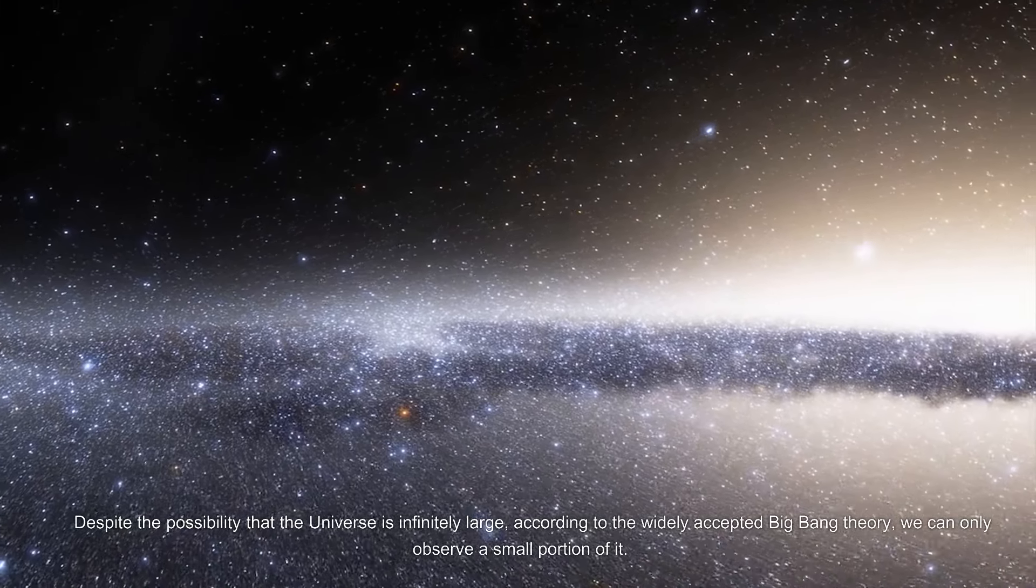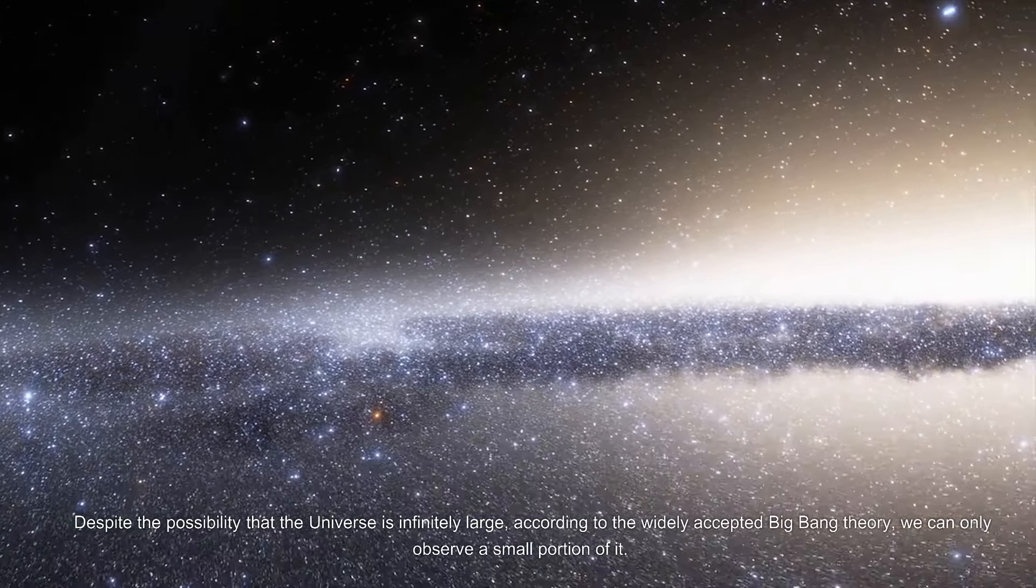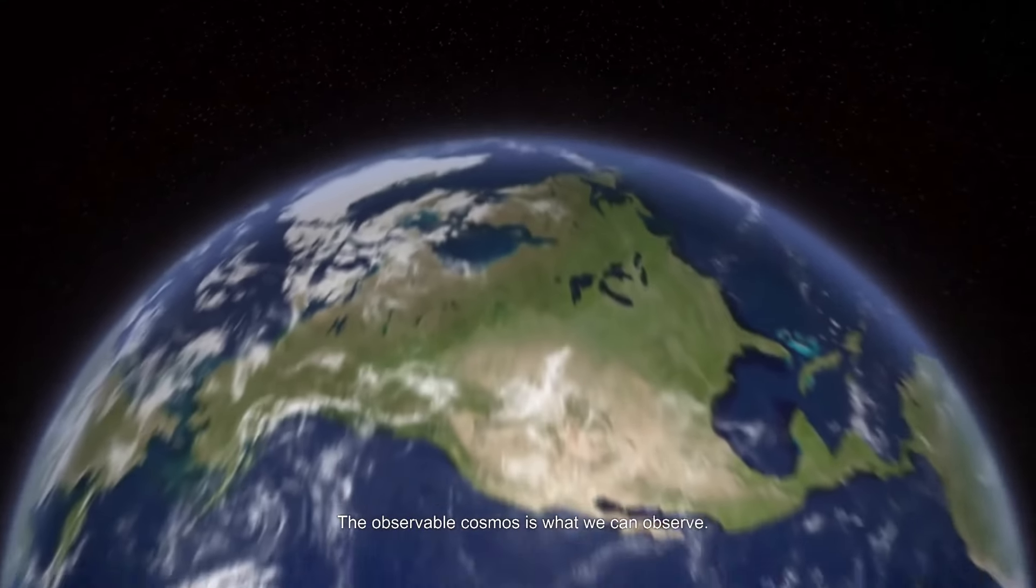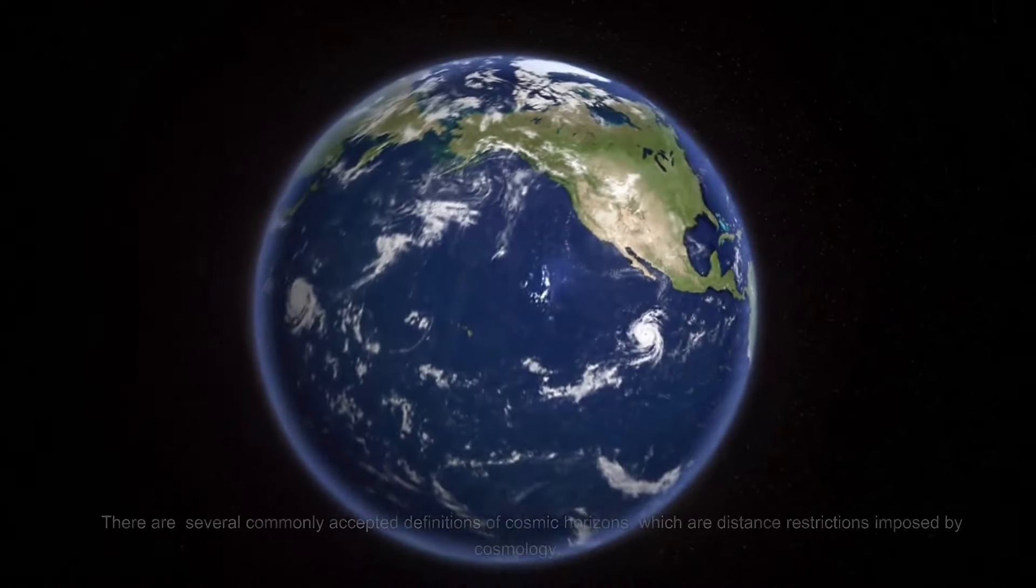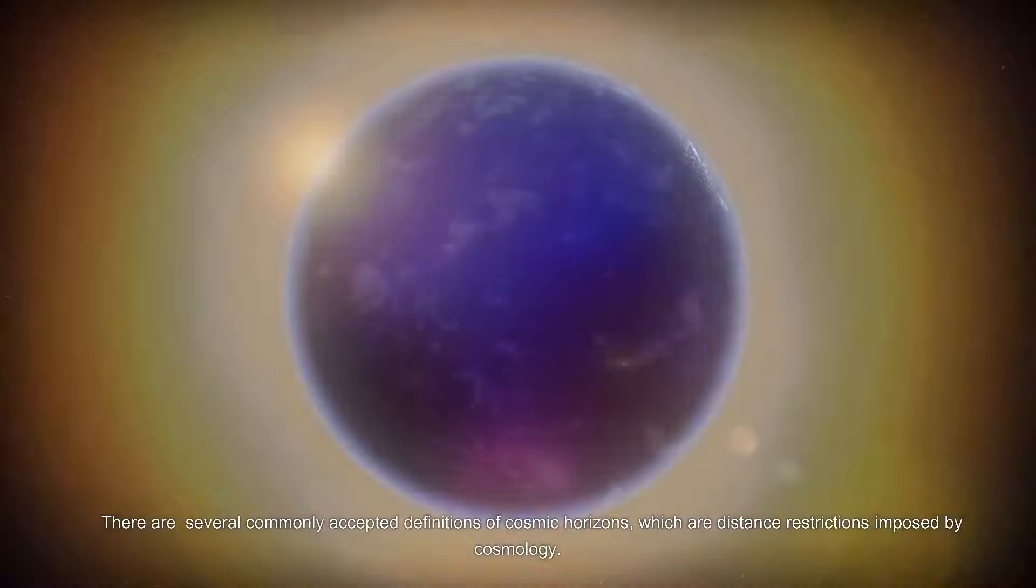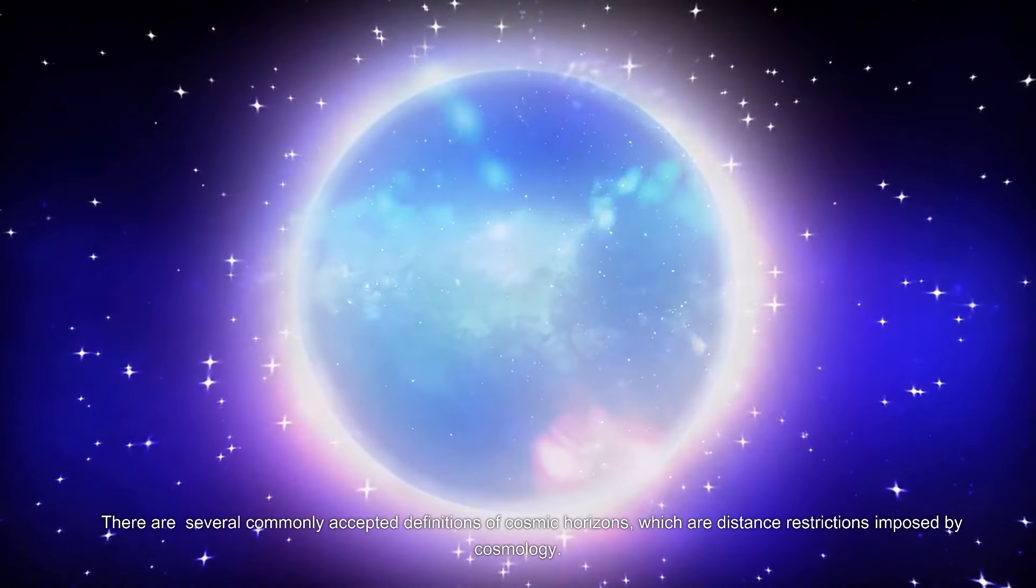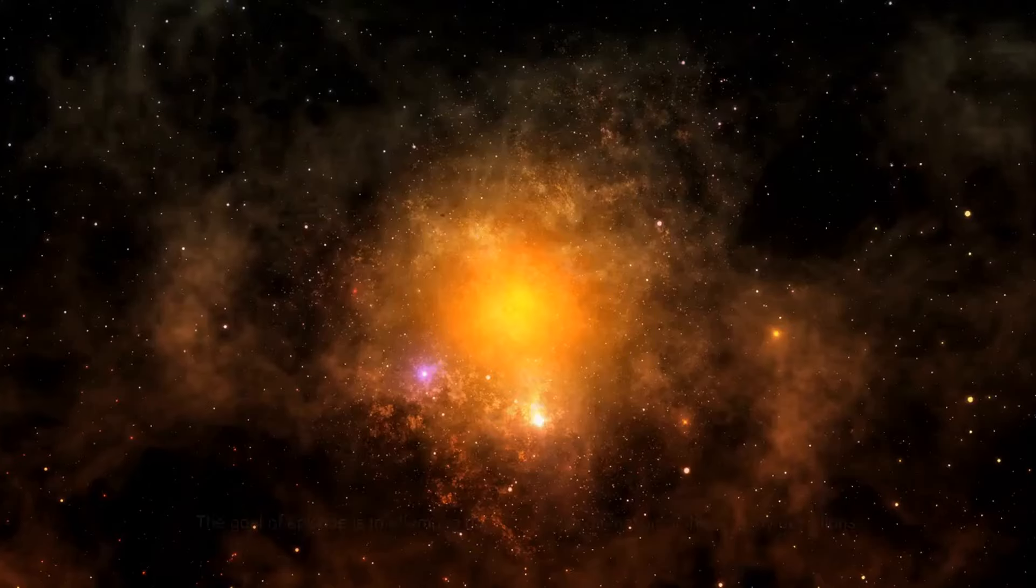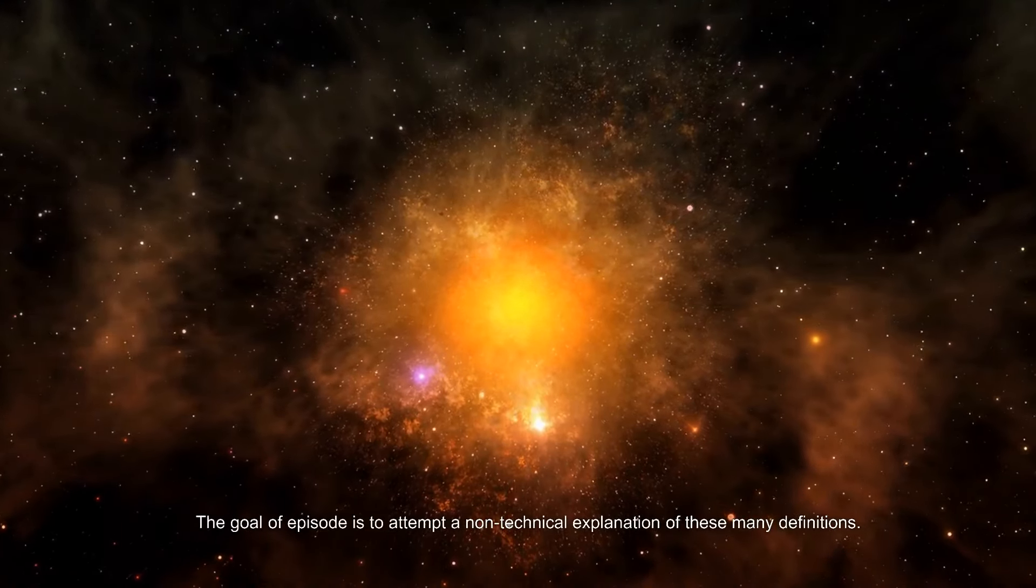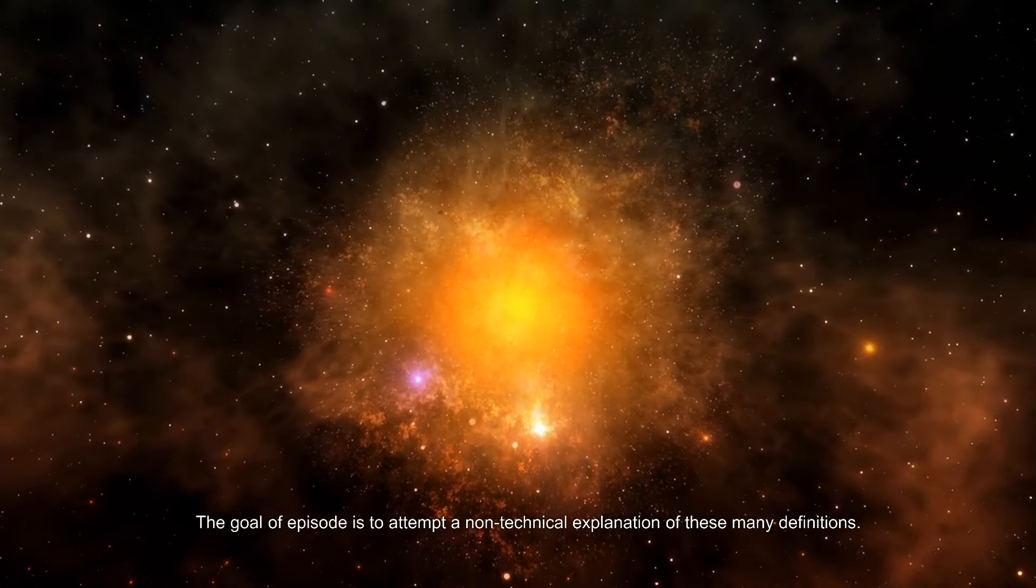Despite the possibility that the universe is infinitely large, according to the widely accepted Big Bang theory, we can only observe a small portion of it—the observable cosmos. There are several commonly accepted definitions of cosmic horizons, which are distance restrictions imposed by cosmology. The goal of this episode is to attempt a non-technical explanation of these many definitions.